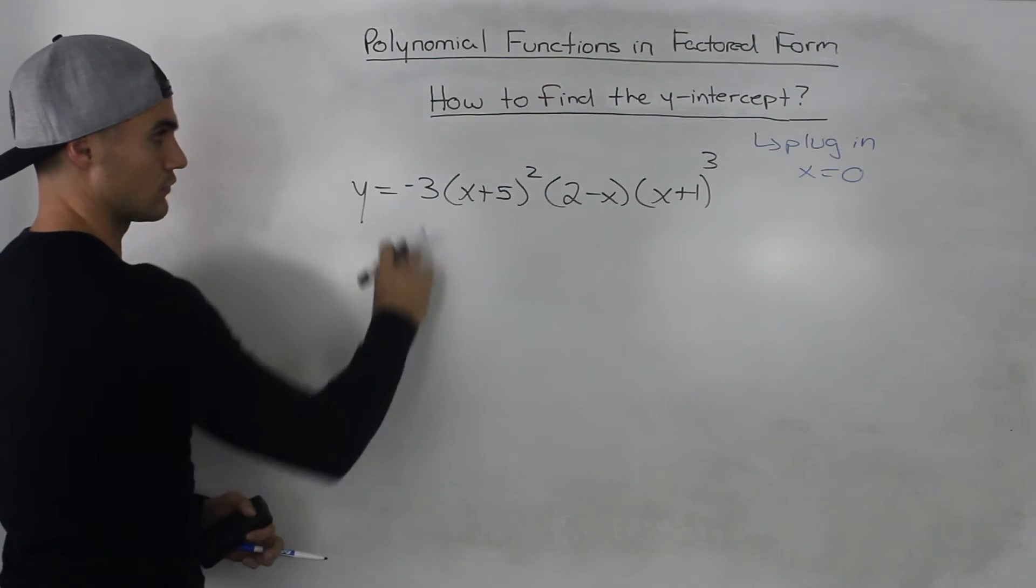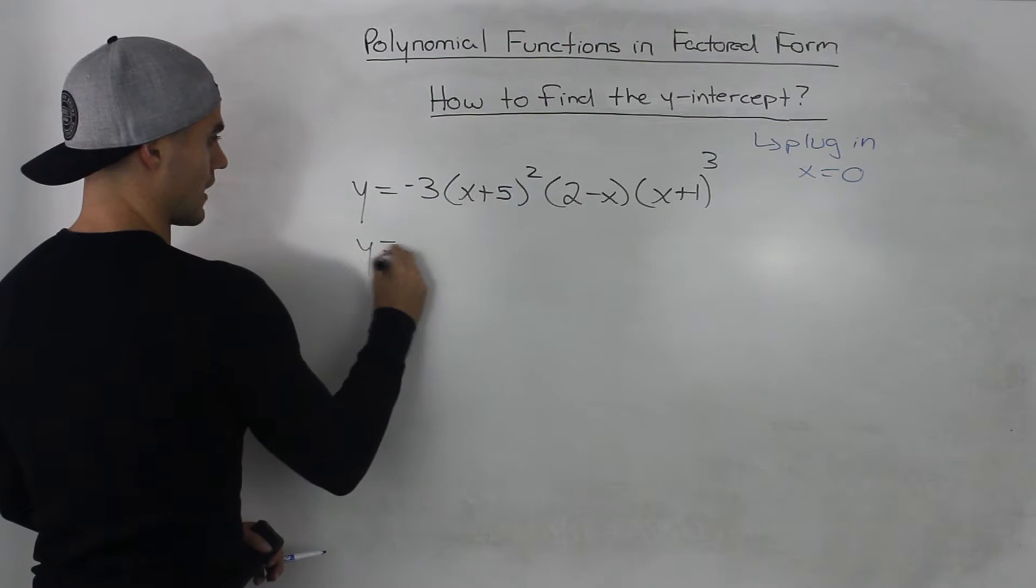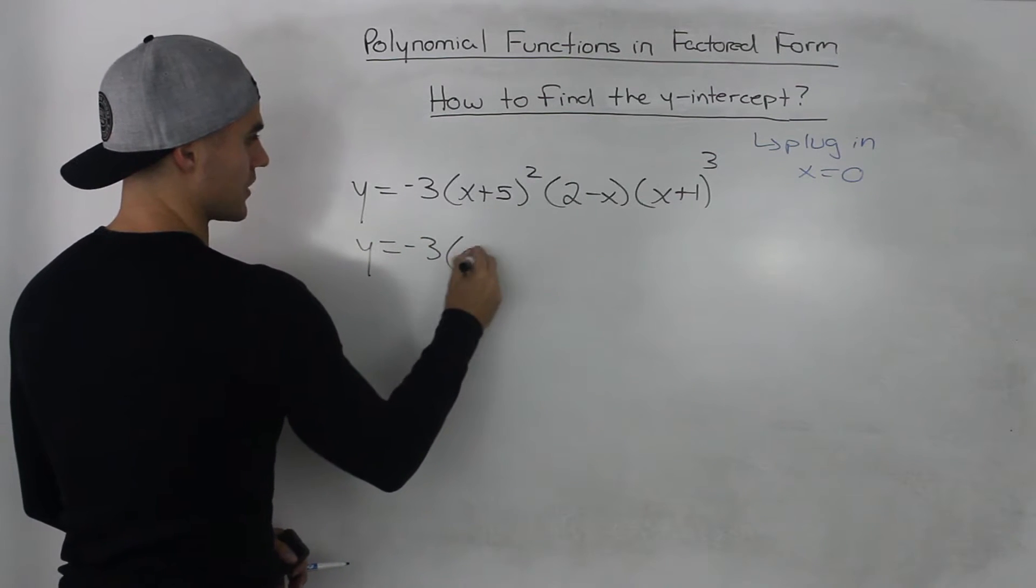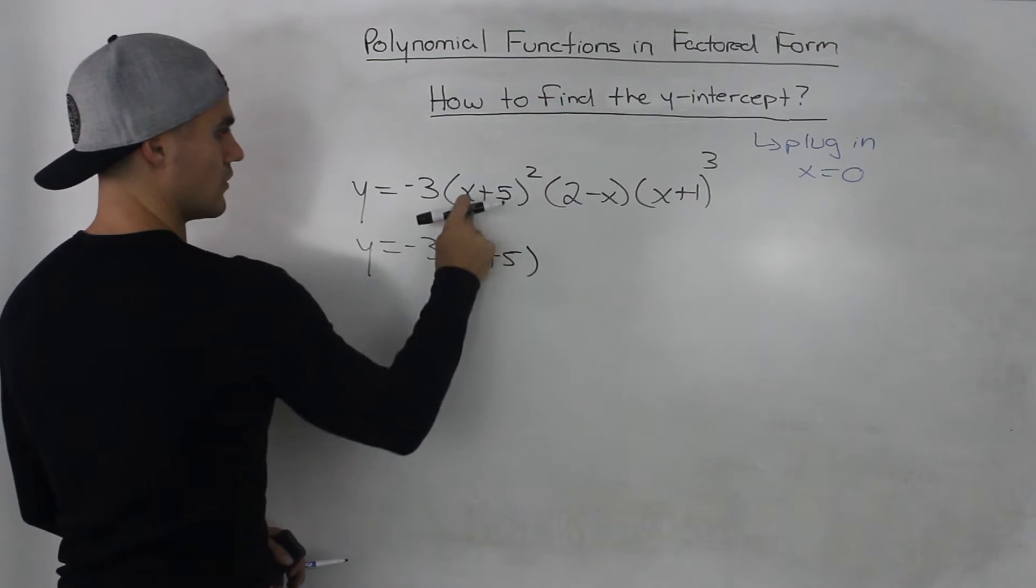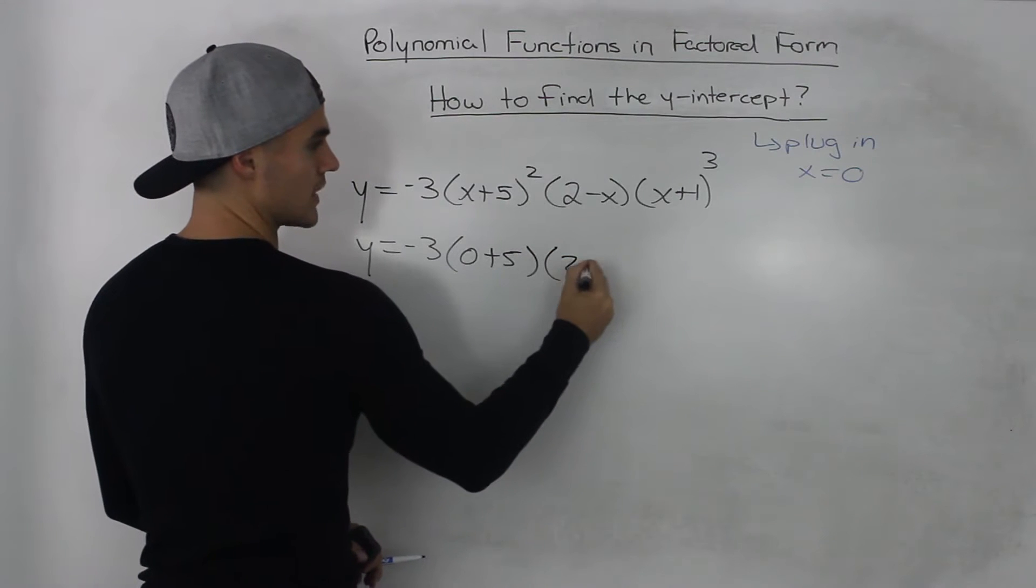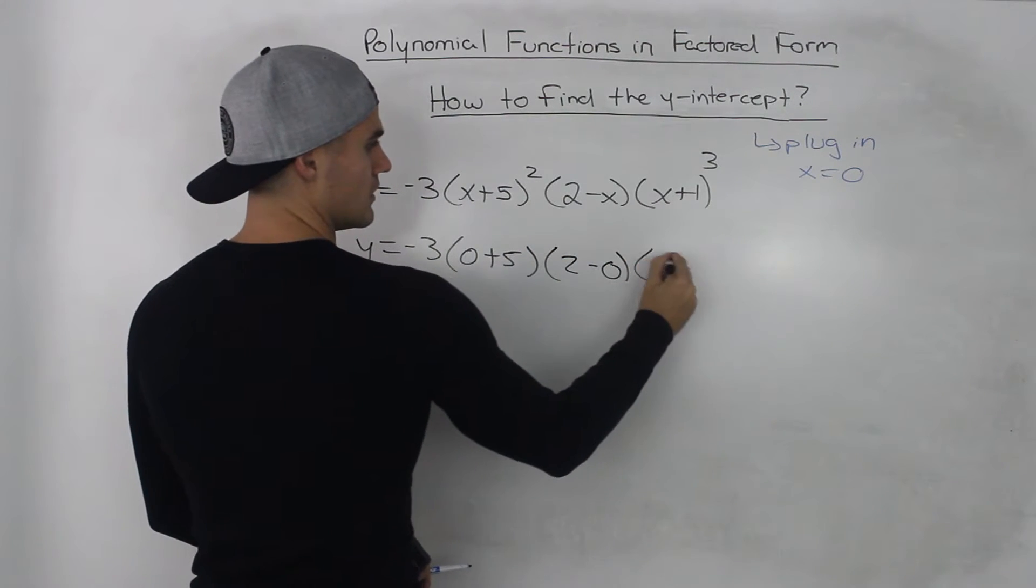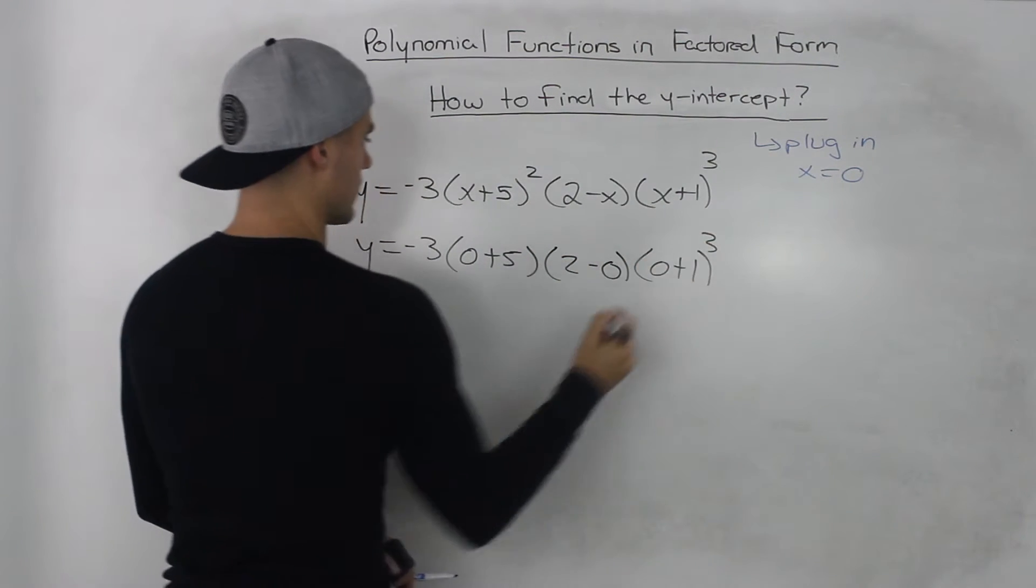So if we're given this polynomial function to find the y-intercept just plug in 0 for all the x's. So we'd have negative 3 times 0 plus 5 squared, 2 minus 0 here, 0 plus 1 to the power of 3 there.